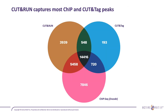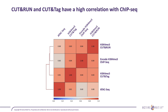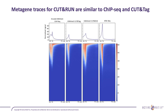There is high correlation between CUT&TAG, CUT&RUN, and ChIP-seq when looking at the same marks, much higher than when comparing to ATAC-seq, which measures open chromatin regions rather than a specific histone mark. Metagene traces are also very similar between the three assays — ChIP-seq, CUT&TAG, and CUT&RUN all show very similar patterns to one another.